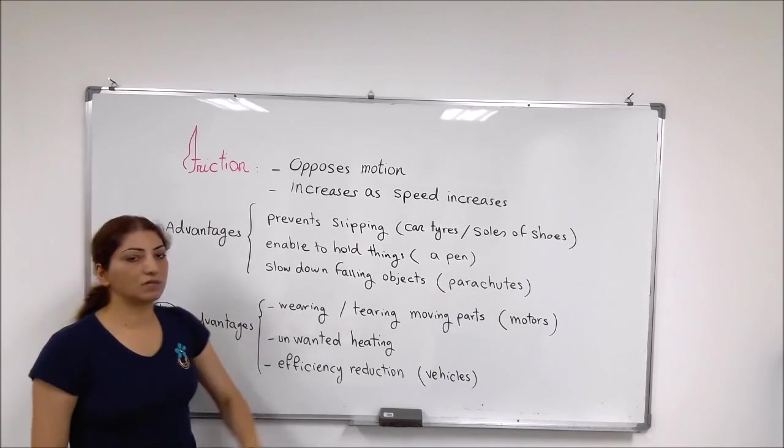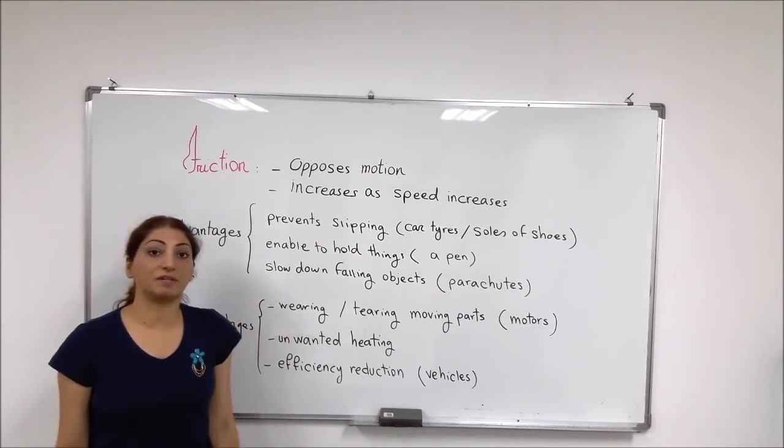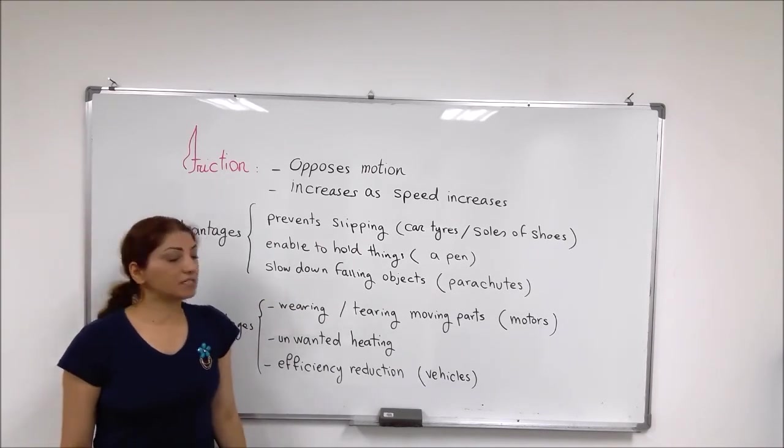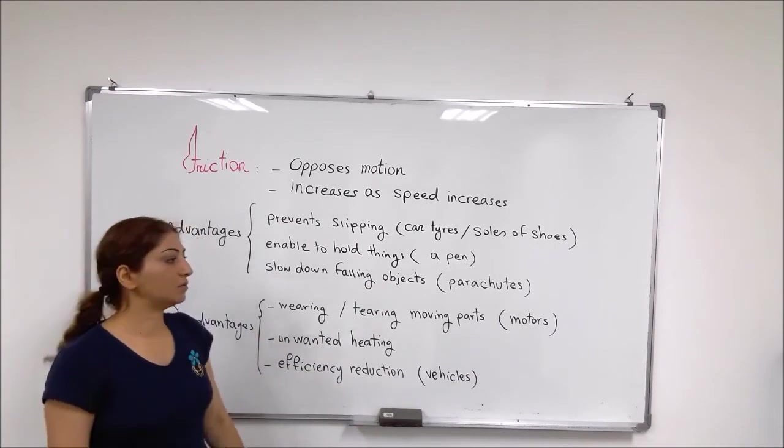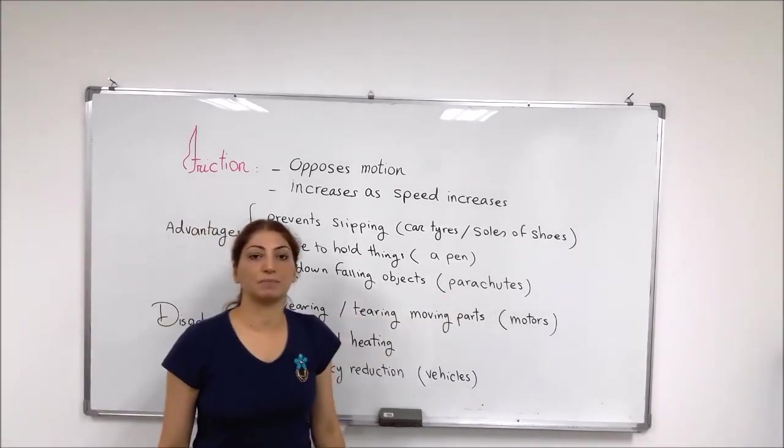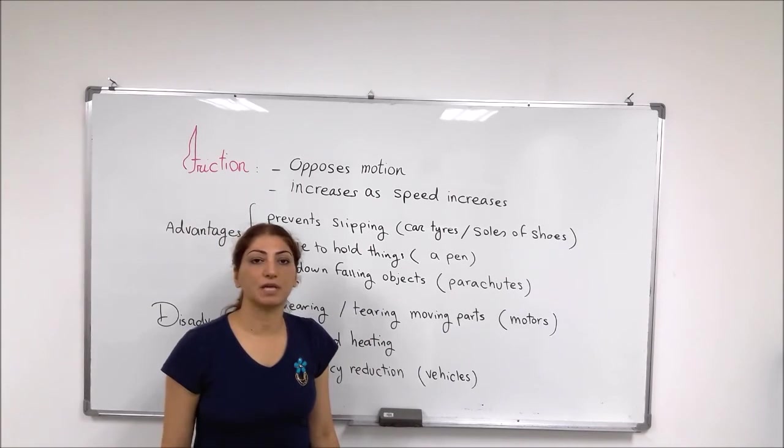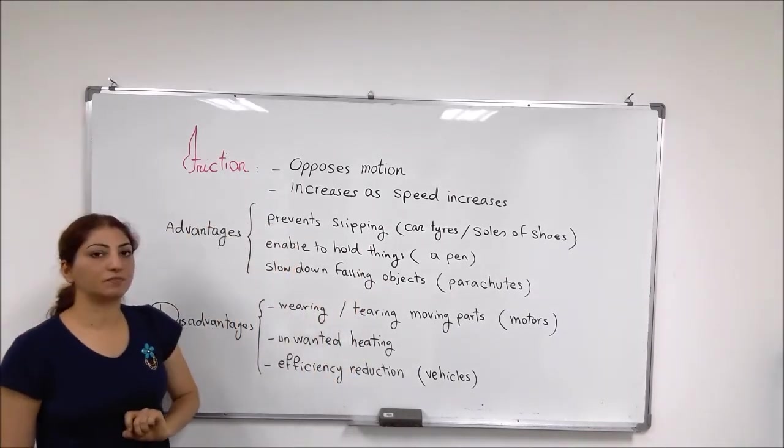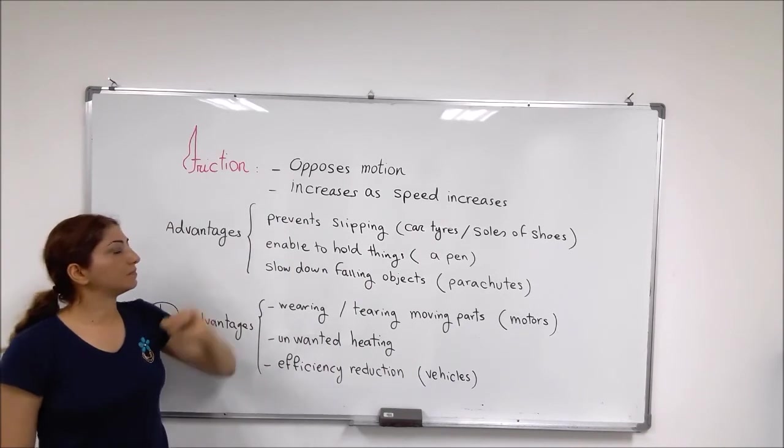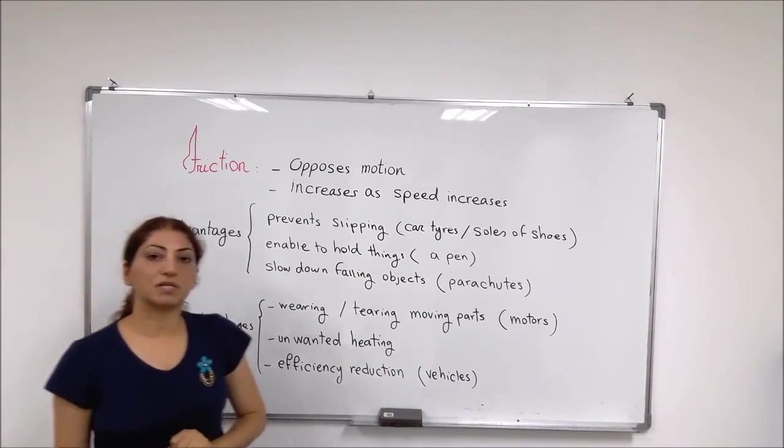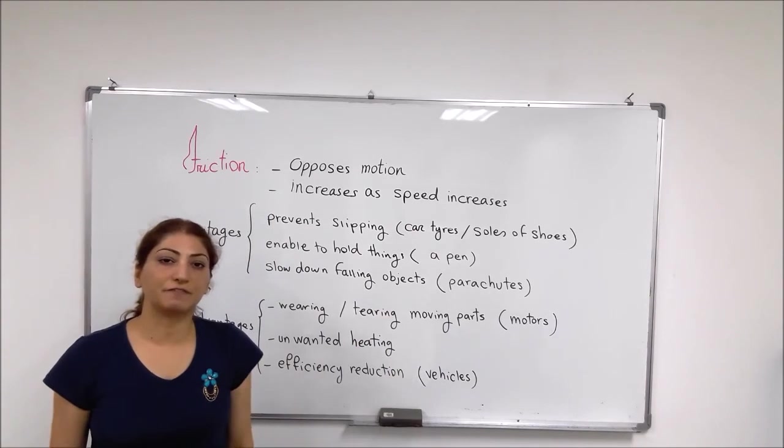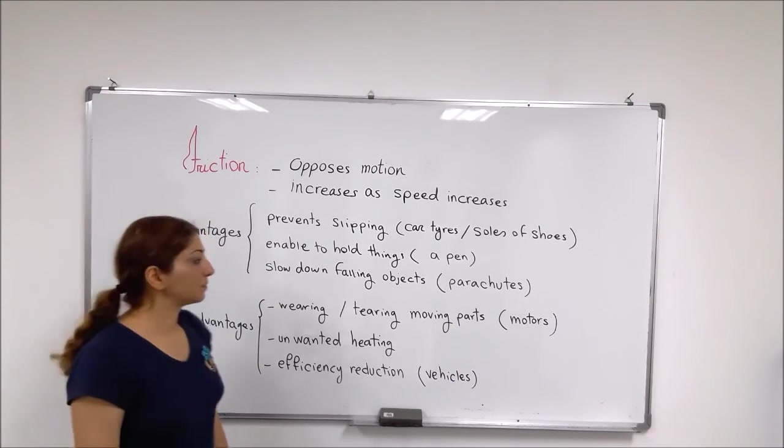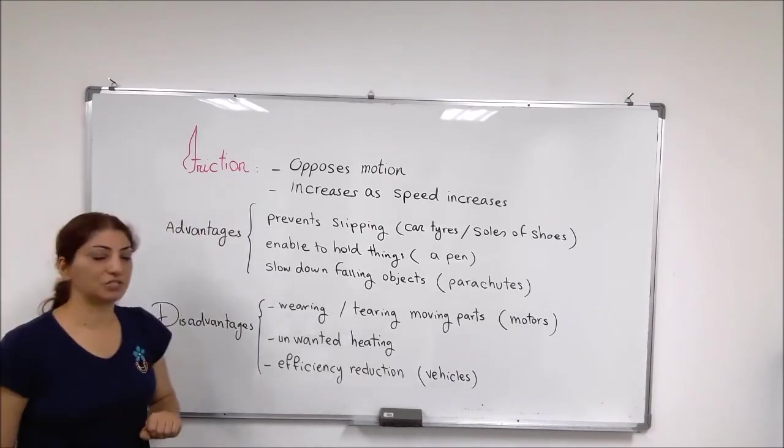Friction slows down falling objects through air resistance. When something falls through the air, like parachutes or skydivers, they use these benefits of friction. The friction doesn't let them land very fast and helps them have a safe landing. These are the advantages or benefits.